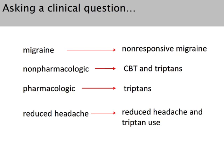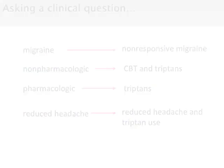So in this case, it's not just migraine, it's non-responsive migraine. It's not non-pharmacologic generally, but I'm actually going to choose something specific: cognitive behavioral therapy and triptans for the intervention, compared to just taking triptans alone for the pharmacologic comparison. And the outcome is reduced headache — but I actually added reduced headache and reduced triptan use. So I've really narrowed in on the kind of literature I'm looking for, and now I'll take these more specific terms to Medline, CINAHL, or PsycInfo to find relevant literature.